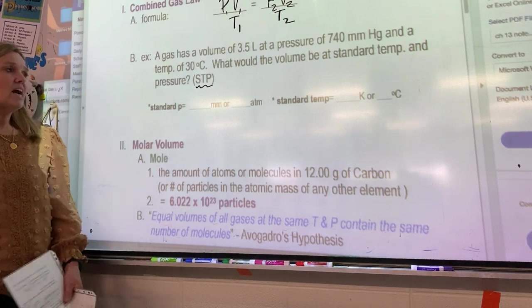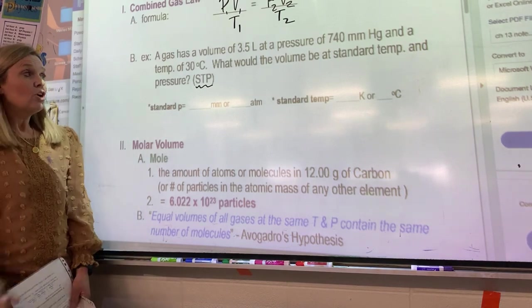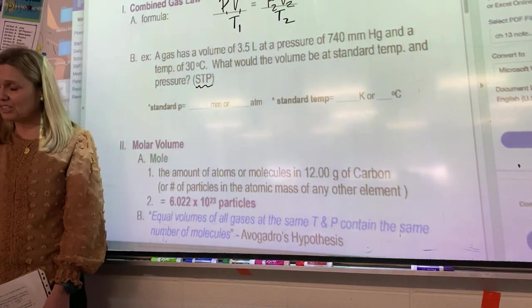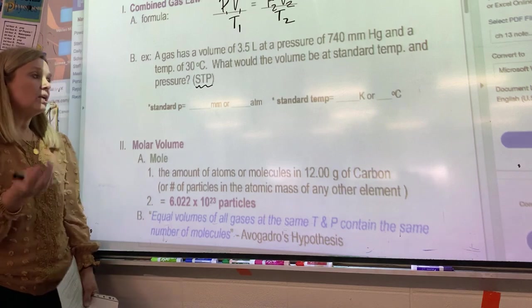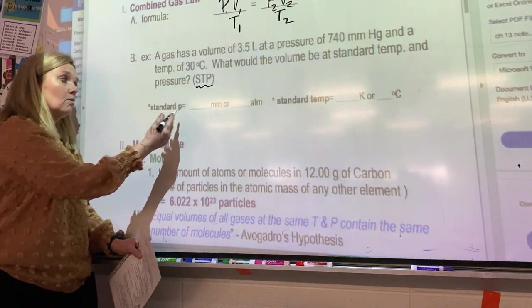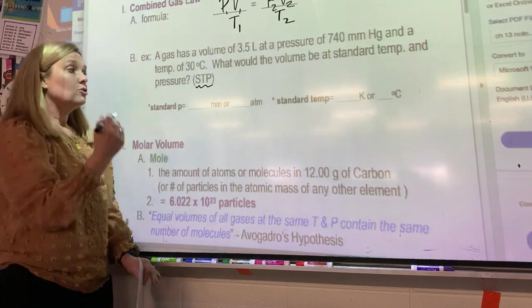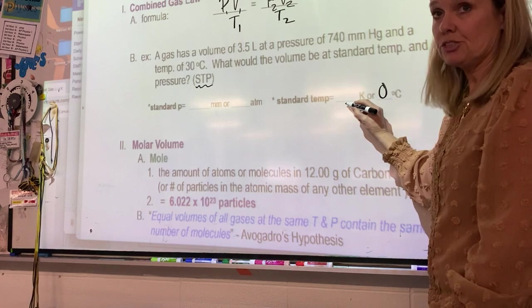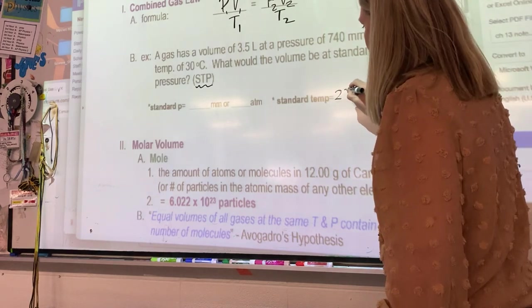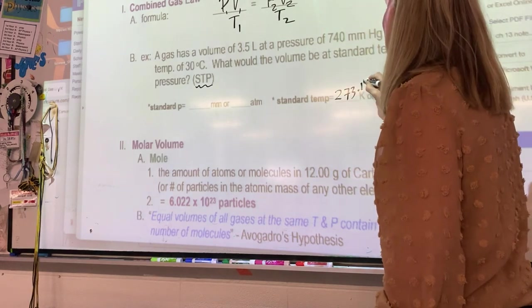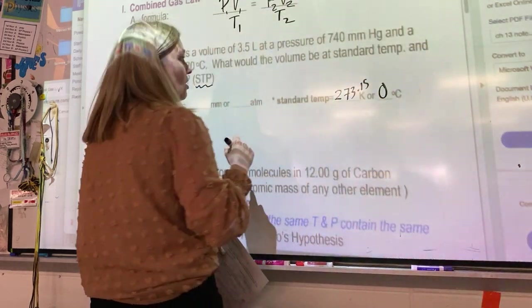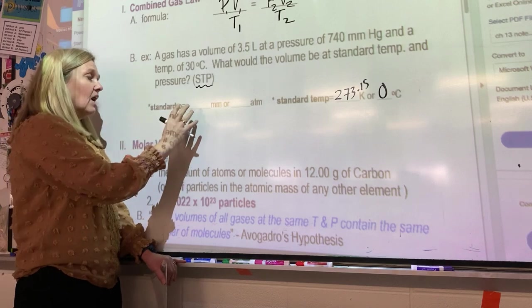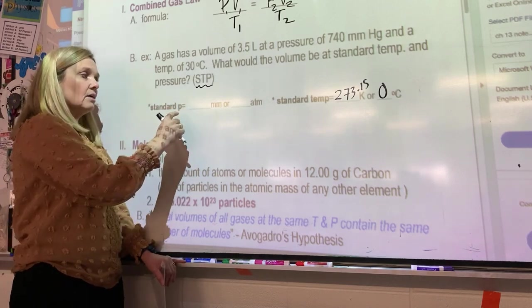STP stands for standard temperature and pressure. That means you need to know when they say that at STP, what is considered standard. What would you think it would be? Zero. Zero Celsius, which is 273.15. And what about standard pressure? What do you think in atmospheres? One.